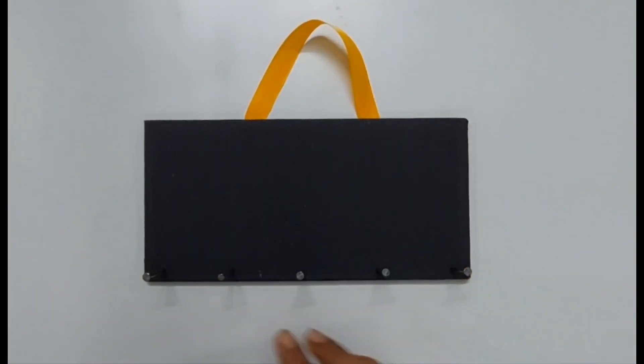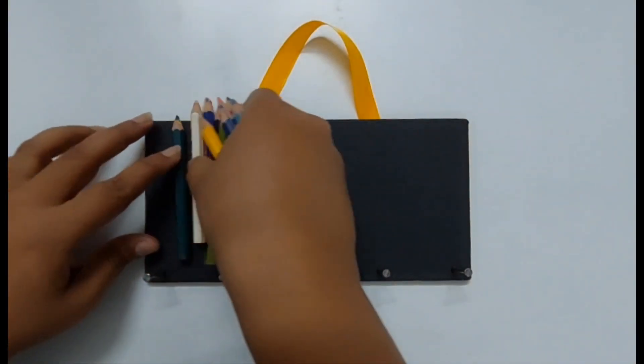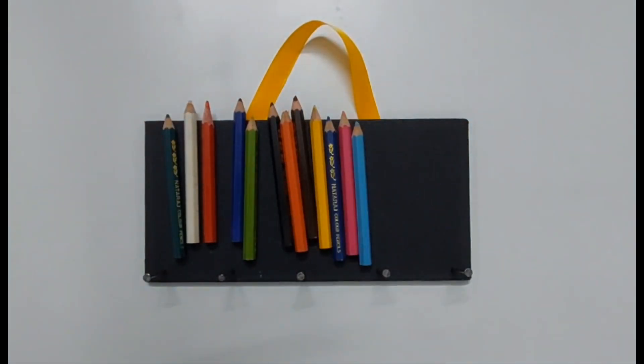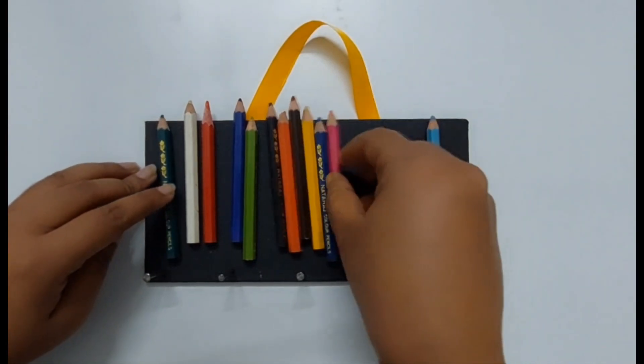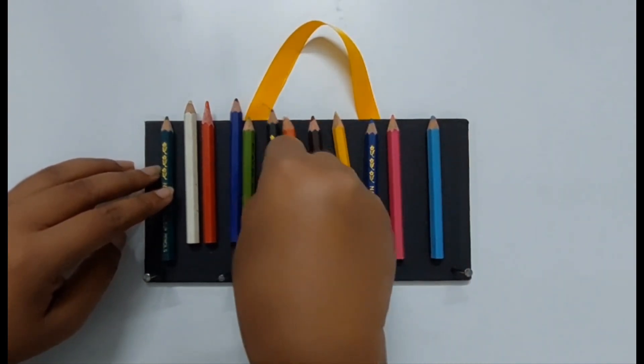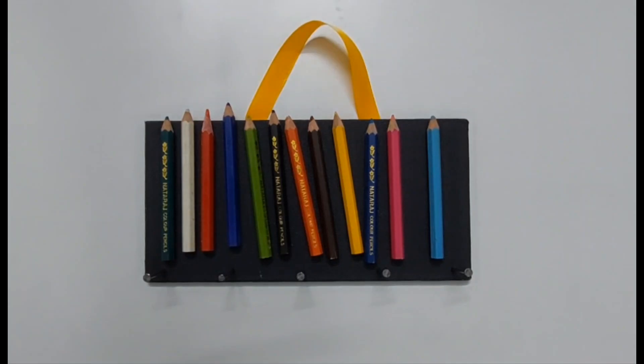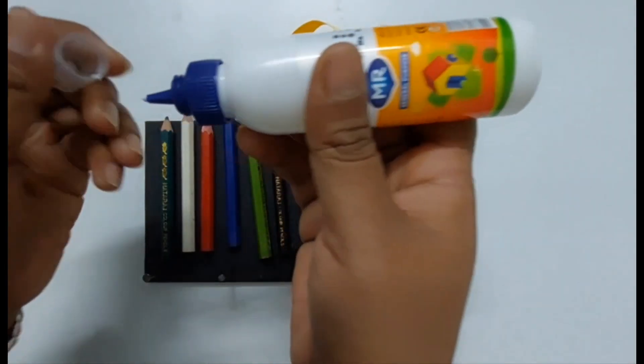As you can all see that I have put the nails here. Now next what I am going to do is arrange these colorful pencils. These are the pencil colors which I am going to arrange for decoration, and I am going to use this fabric glue. One by one I will be sticking all the pencil colors.